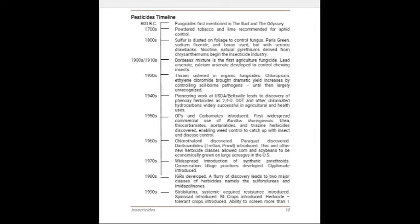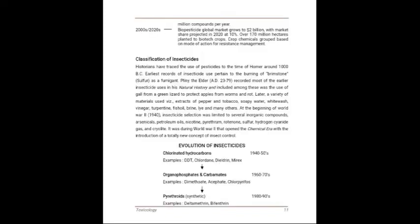In 800 BC, fungicides were first mentioned. In the 1800s, the insecticide industry began. In the 1940s, phenoxy herbicides were discovered. From 2002 to the 2020s, crop chemicals were grouped based on mode of action for resistance management. Next is the classification of insecticides.